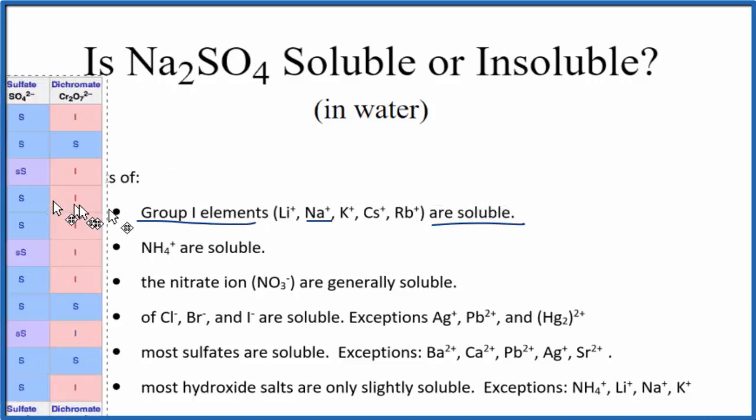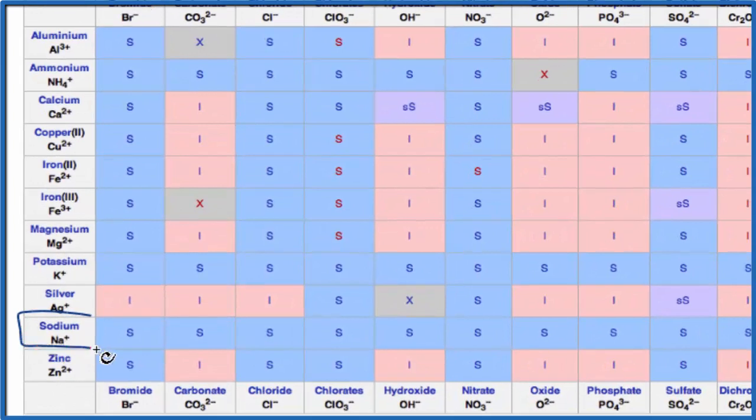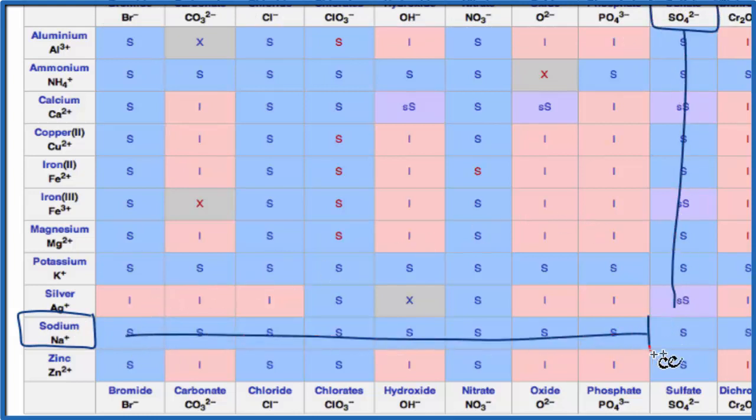We could also look at a solubility chart. When we look at our chart, we're looking at the positive ions, and here's sodium down here. We're looking for sulfate. Go across the top to the anions, here's sulfate. So we go down and then across, and that S right there means that sodium sulfate will be soluble in water.